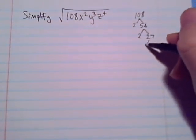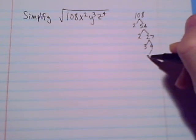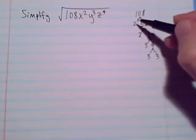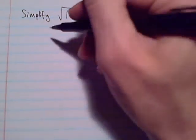There's an odd number, so I can do 3 times 9, and the 9 is 3 times 3. So for the coefficient 108, we've got 2, 2, 3, 3, 3.